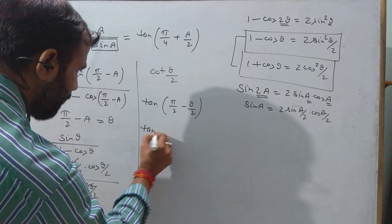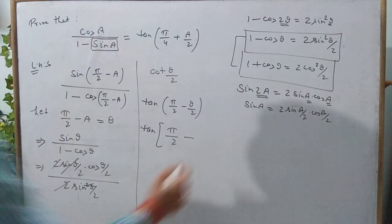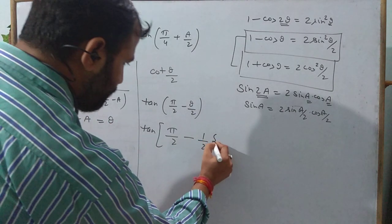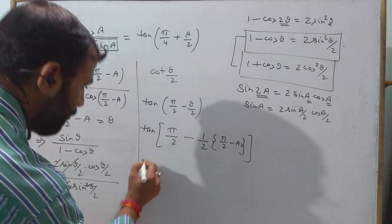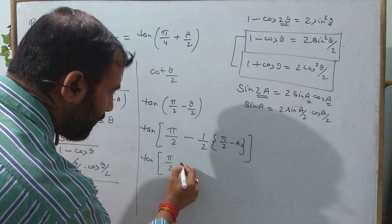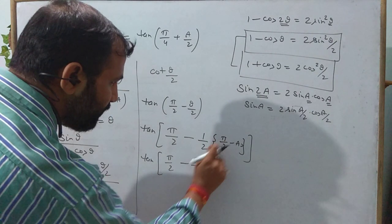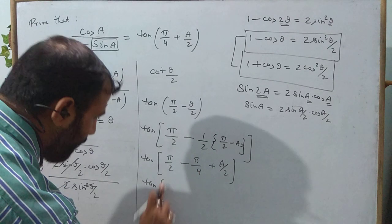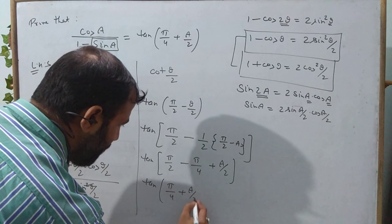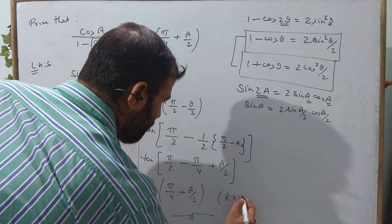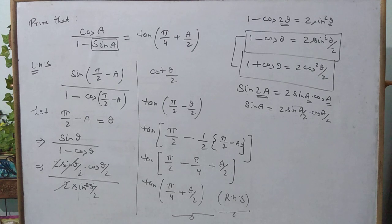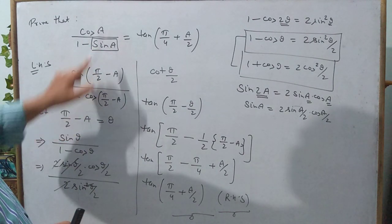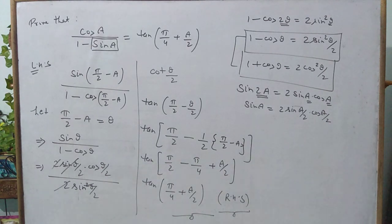So we have tan(π/2 − θ/2). Now substituting back θ = π/2 − A: tan(π/2 − (π/2 − A)/2) = tan(π/2 − π/4 + A/2). Since π/2 − π/4 = π/4, this gives tan(π/4 + A/2), which is the RHS. So whenever 1 − sinA appears, convert sin to cos to apply the standard formula.